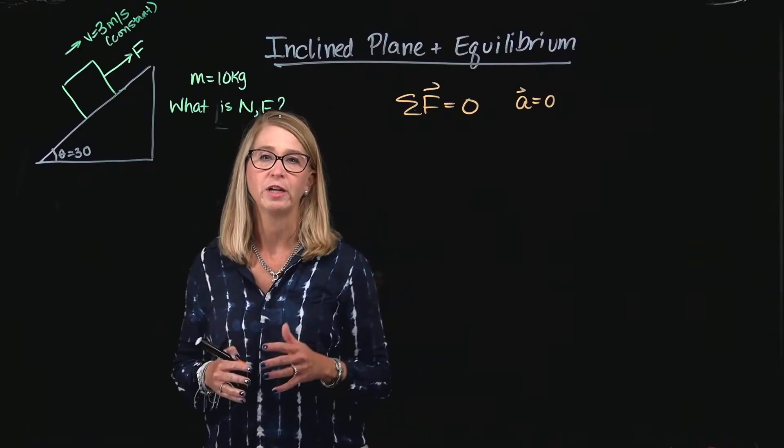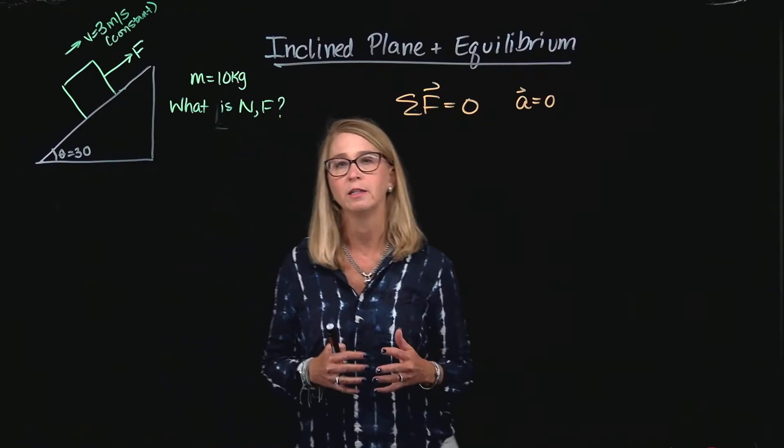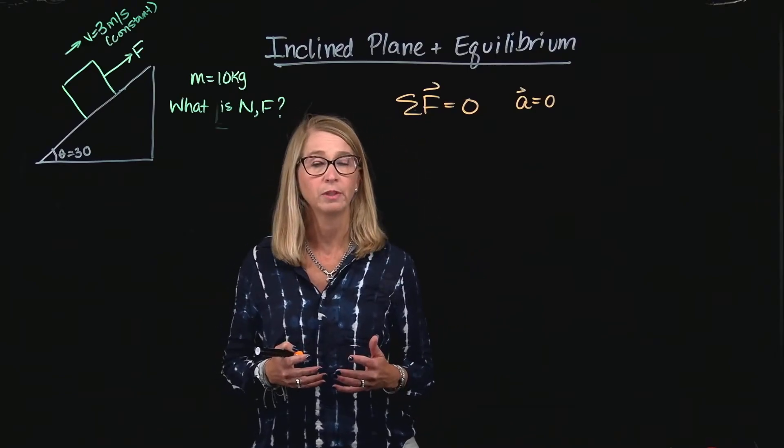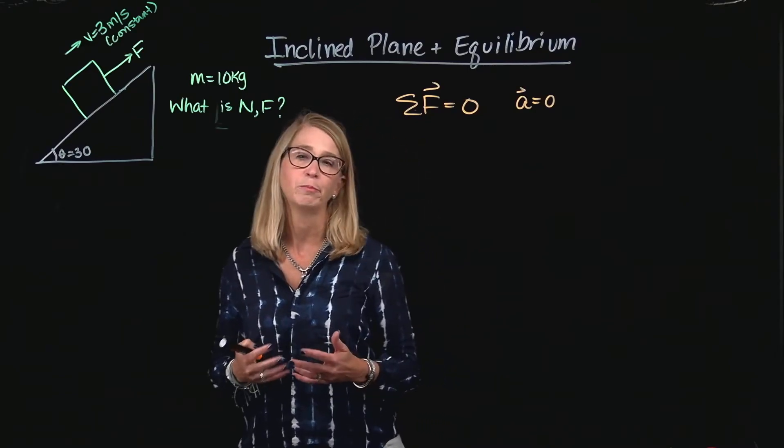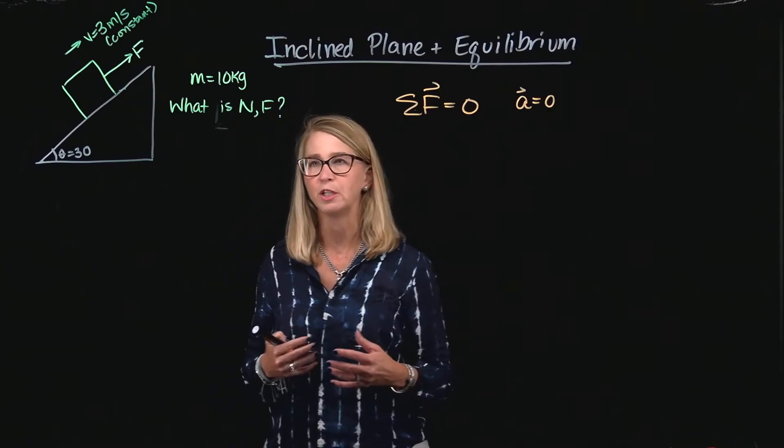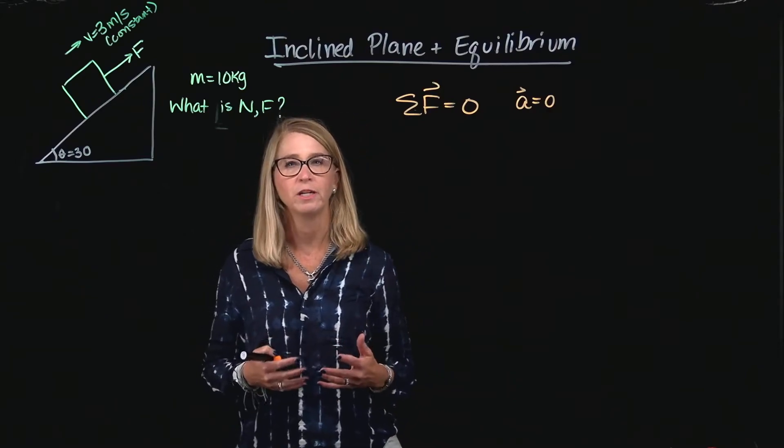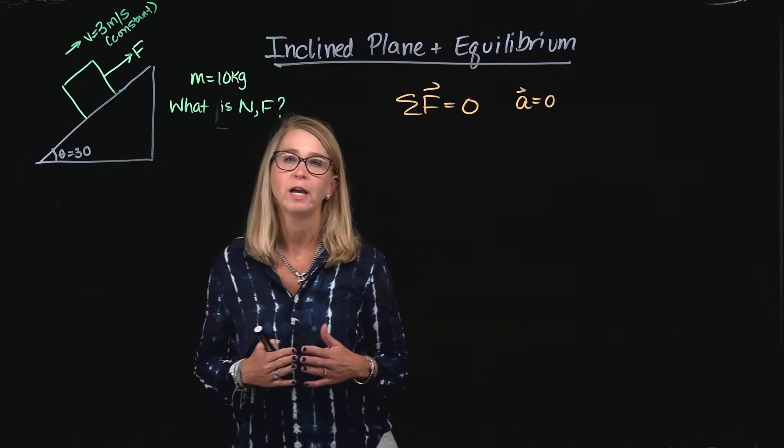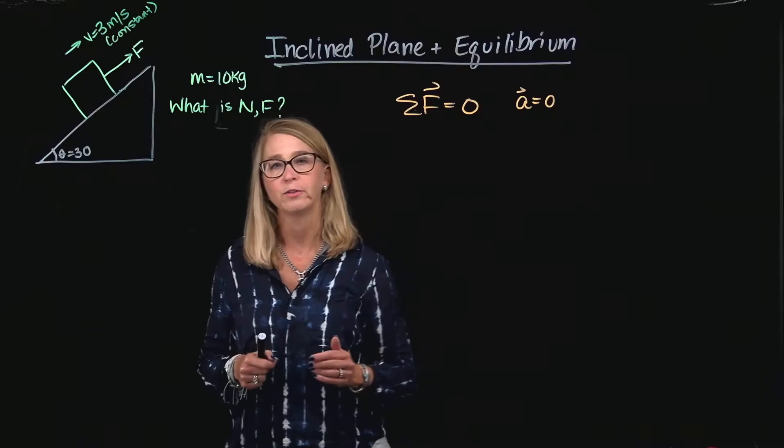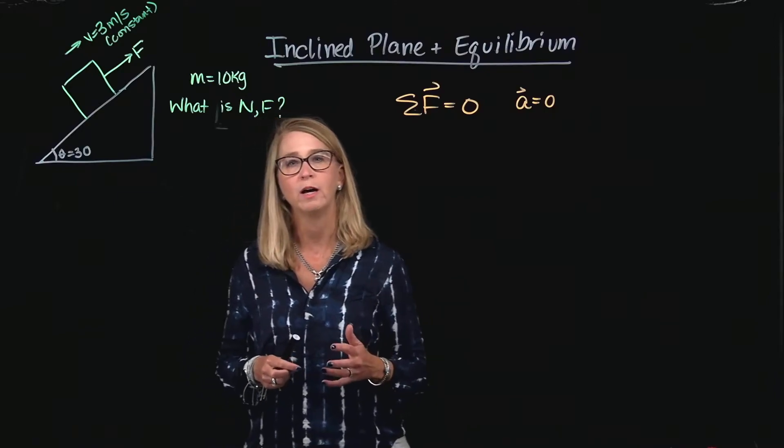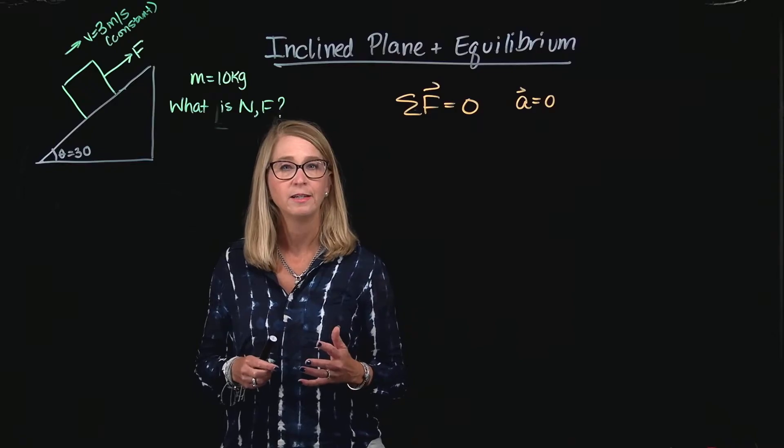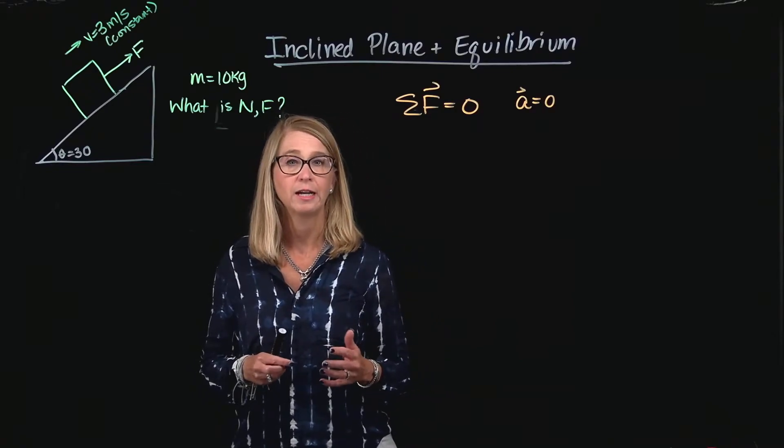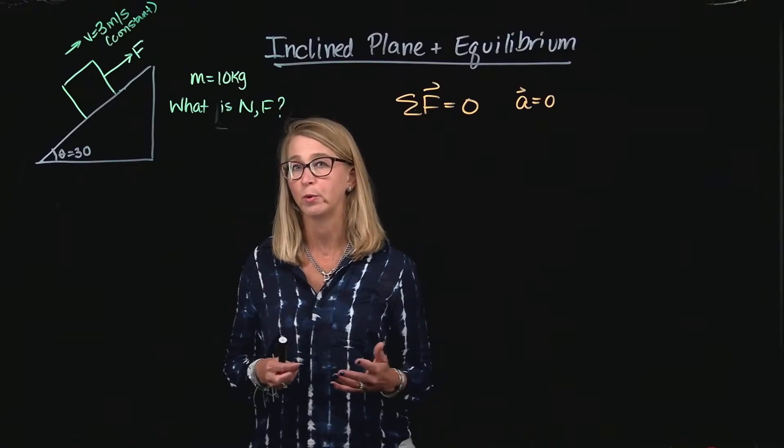So for this example, I wanted to combine the idea of looking at equilibrium with the inclined plane, because the inclined plane presents us with something new that may or may not confuse us, and that is how we orient our x and y axis as well as what that means for the weight vector, which will end up being at an angle to the x and y axis, which isn't what we're used to.